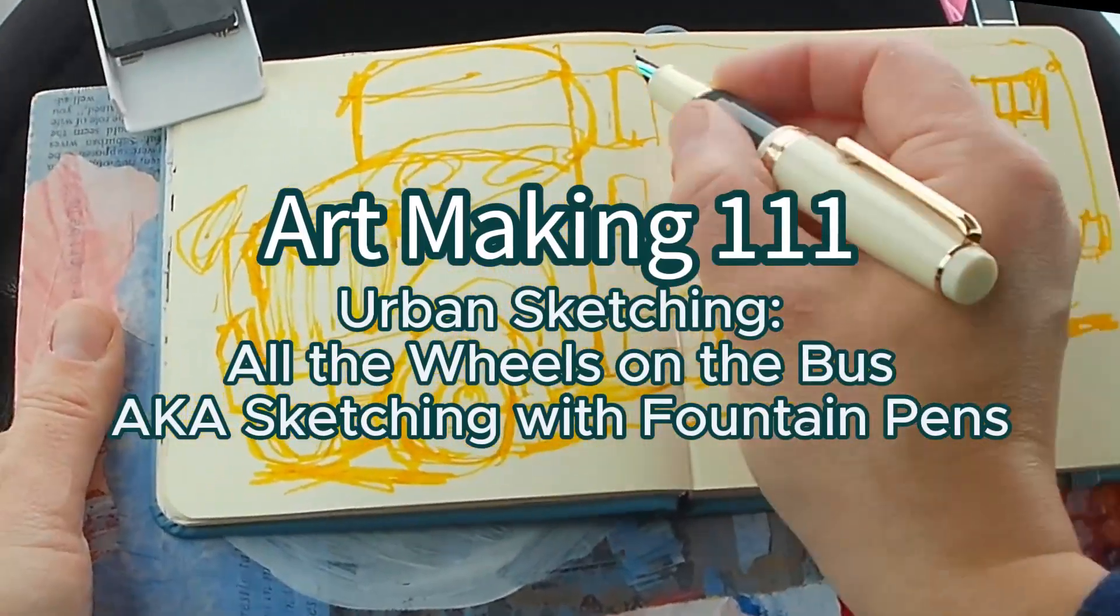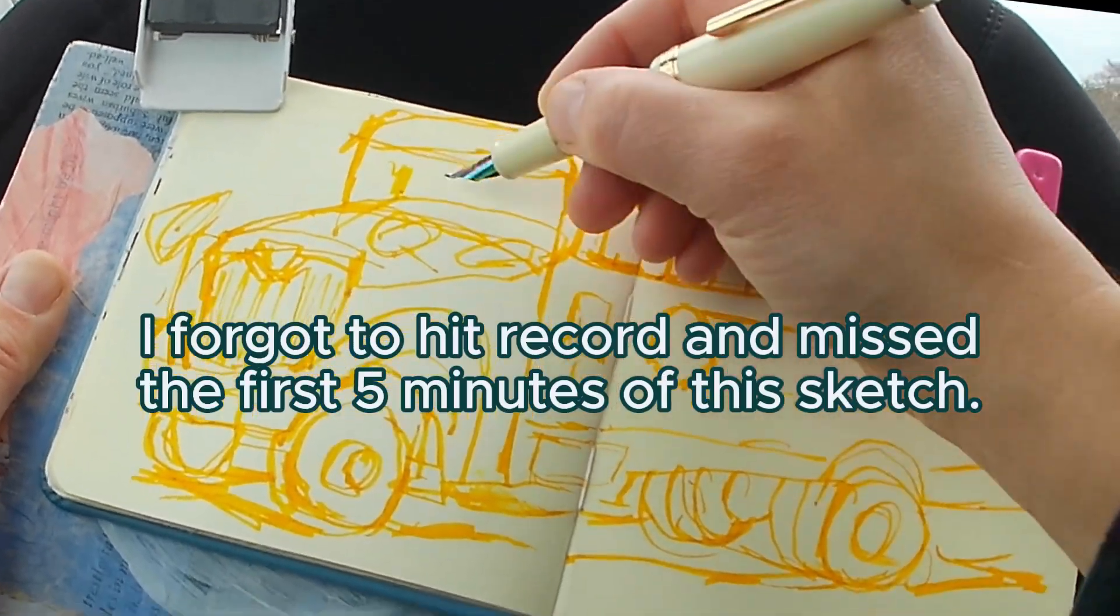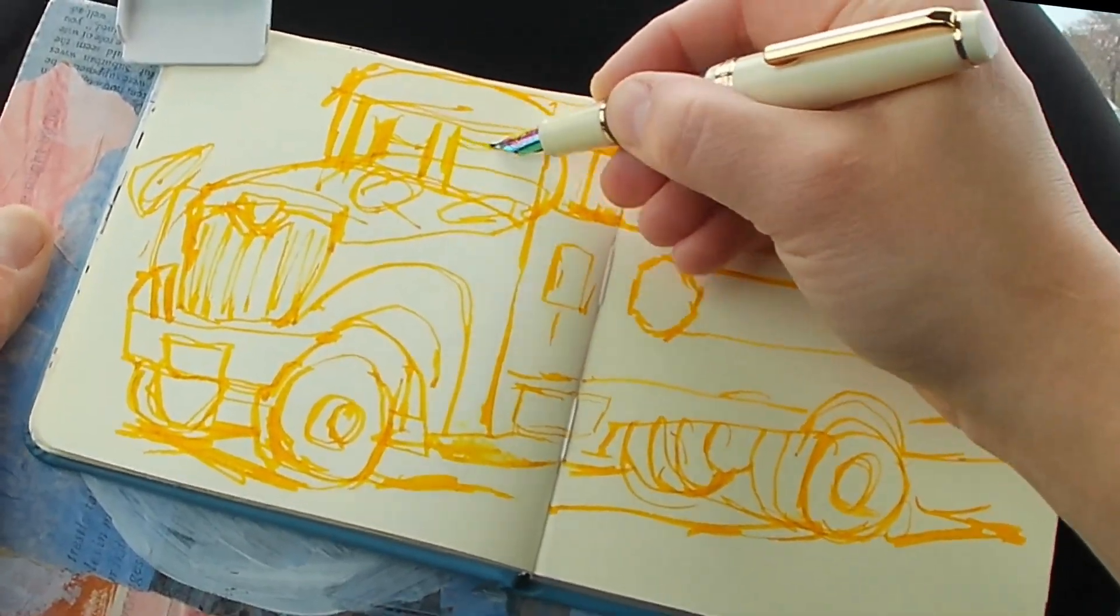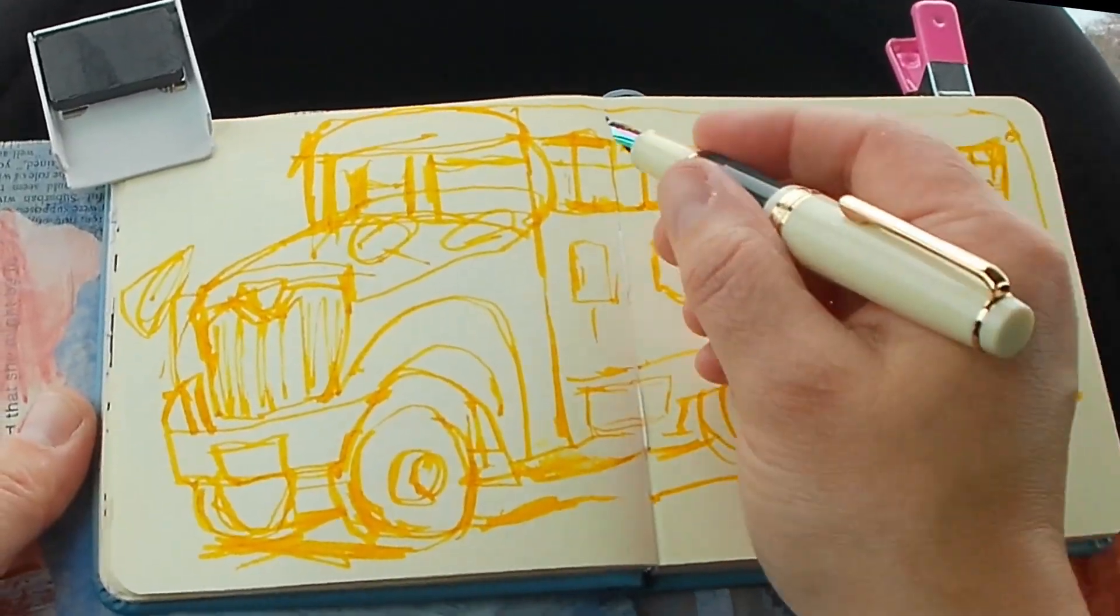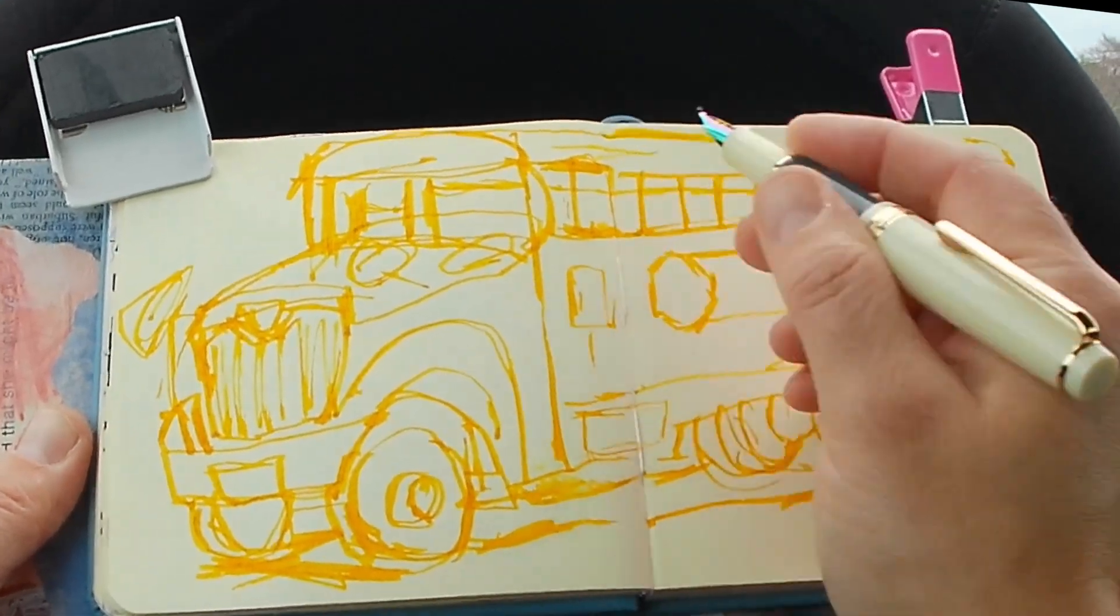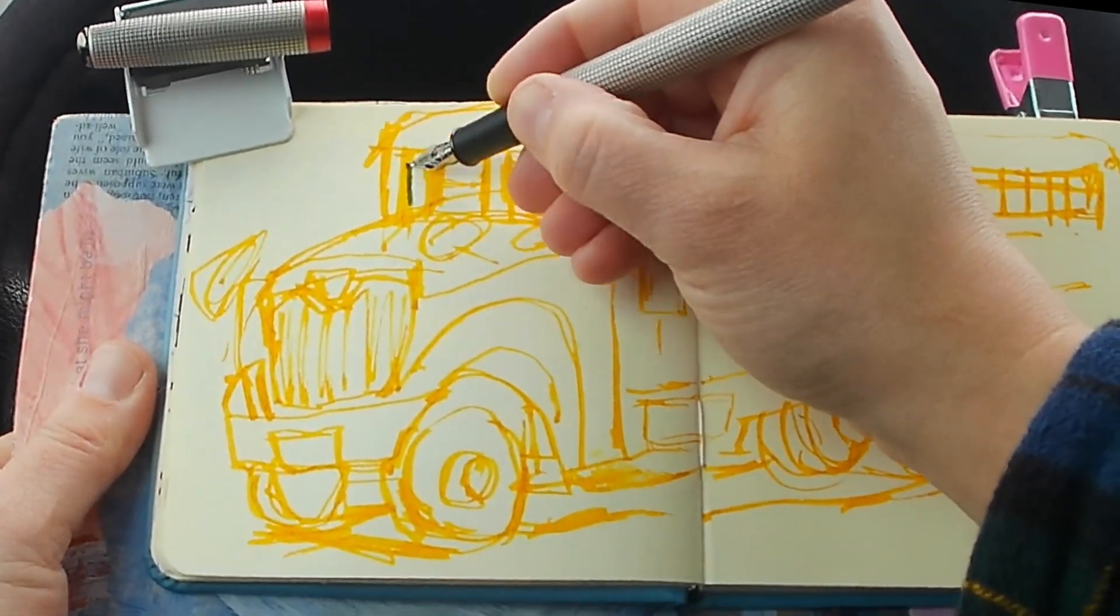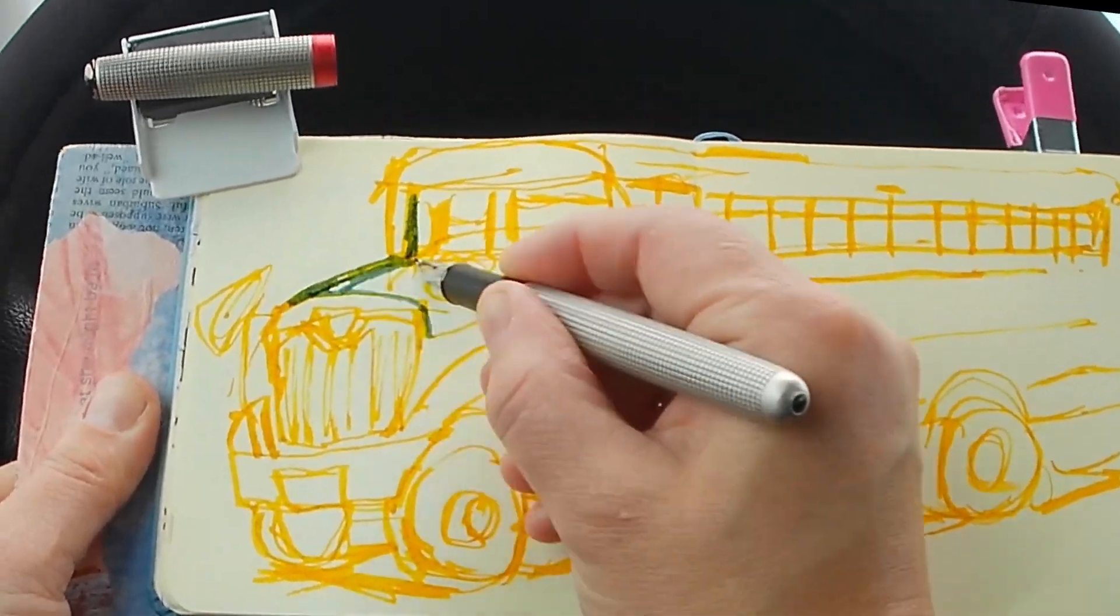Hey, it's Les from Comfortable Shoes Studio, and welcome to another episode of Art Making. In this episode, I am doing some urban sketching of wonky vehicles as I push myself to learn how to draw vehicles a little better, but also in my style.